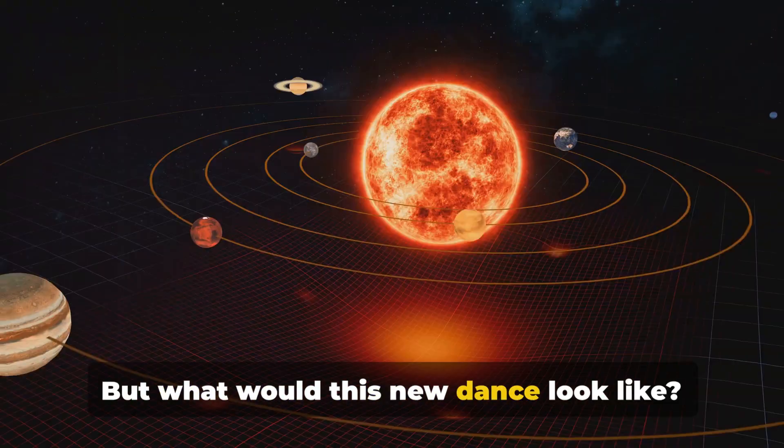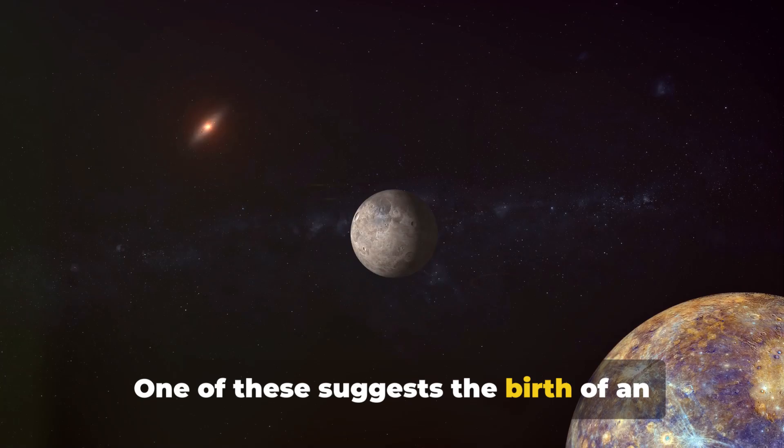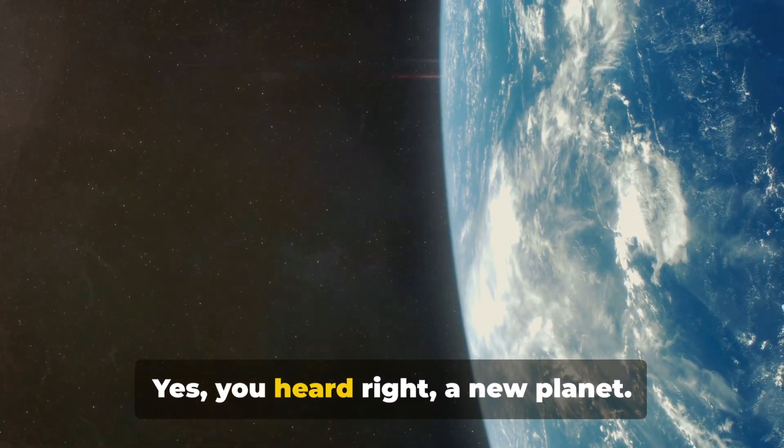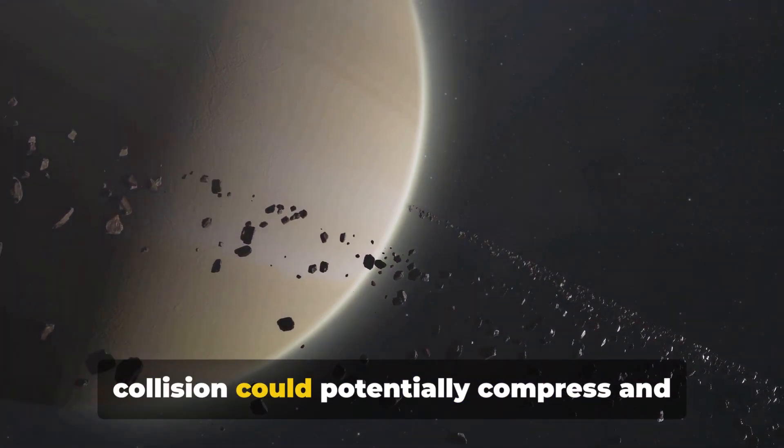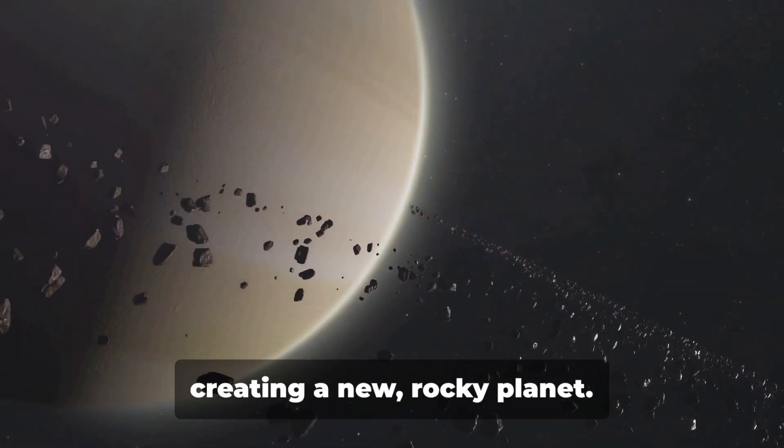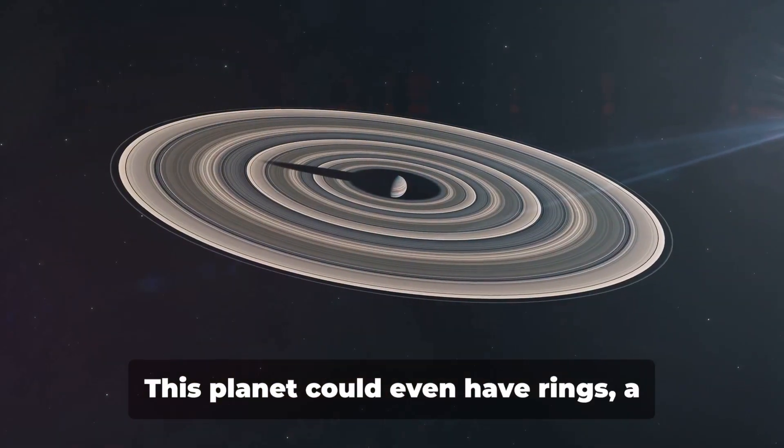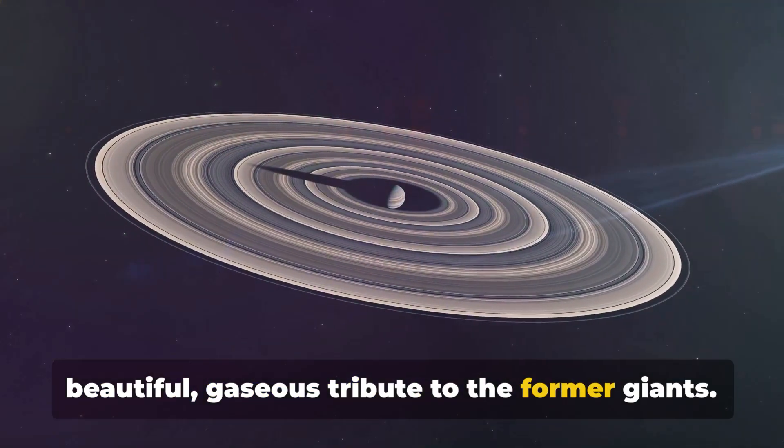But what would this new dance look like? Well, there are several theories. One of these suggests the birth of an entirely new planet. Yes, you heard right, a new planet. The unimaginable energy released from the collision could potentially compress and heat the gases of Jupiter and Saturn, creating a new rocky planet. This planet could even have rings, a beautiful, gaseous tribute to the former giants.